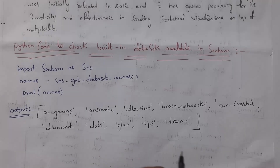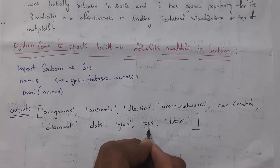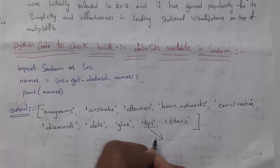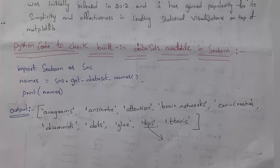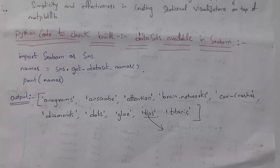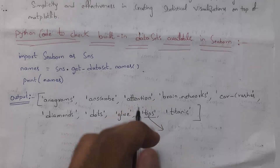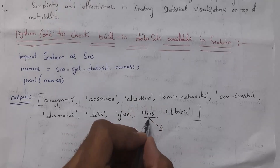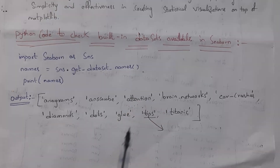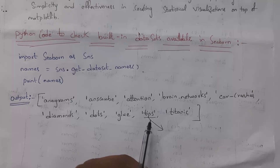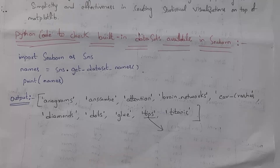In our programs, we will use the TIPS dataset and perform data visualization. I will now explain a program in order to identify the complete data which is present in the TIPS dataset. The TIPS dataset contains complete information about restaurant tips. We will check the information present in this TIPS dataset.